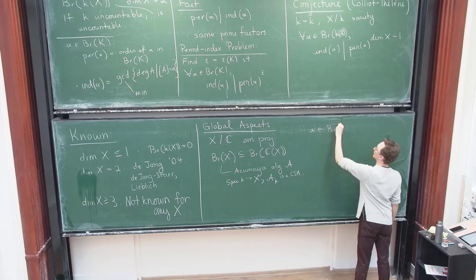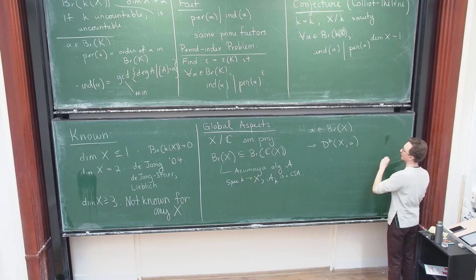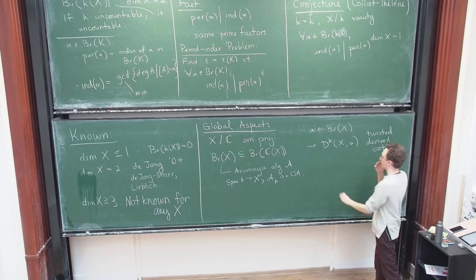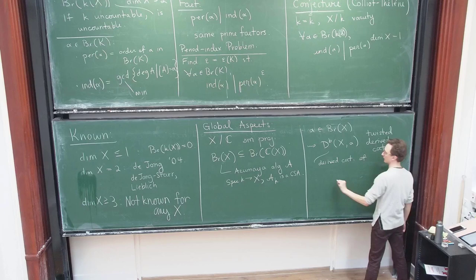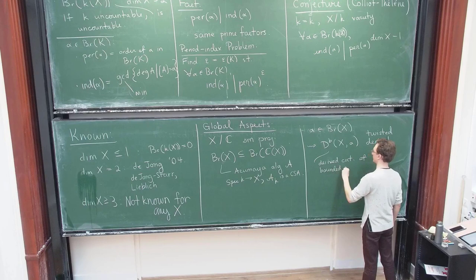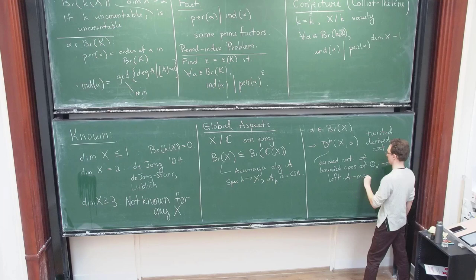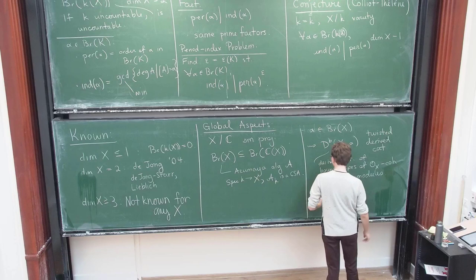So associated, so if I take some alpha in this sort of global Brouwer group, I can associate to it a category which is a twisted derived category. And so this was first studied in detail by Caldararu. And one way to think about this is you can think about it as the derived category. There's many ways to think about it, but you can think about it as the derived category of, you know, bounded complexes of O_X coherent left A-modules where you've chosen an Azumaya algebra representing A. So you just think of it as you have a sheaf of algebras, you look at the corresponding category of algebras.